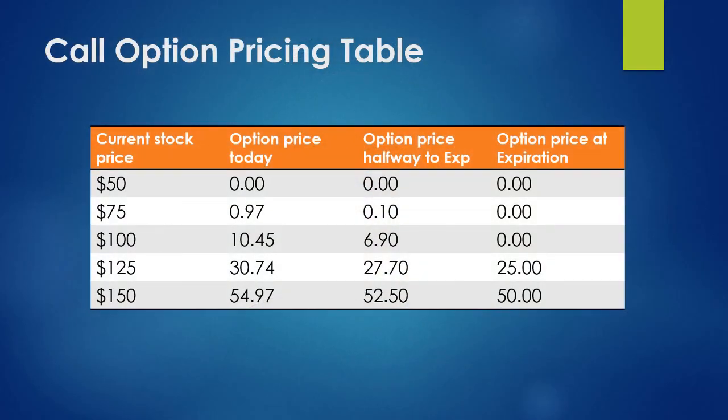To expand our understanding of how this calculation is working, we can create a table to understand the sensitivity of some of these variables. If we keep all the other variables the same but change where the current stock price is, this gives us a sense of what it will do to the value of our option — at current prices of $50, $100, and $150. You can plug these variables into your calculator and figure this out on your own.